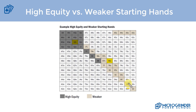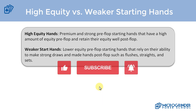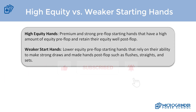That's our introduction to high equity versus weaker starting hands. The main takeaway is understanding the difference between the two, because as we look at different ranges in different situations, I want you to understand what portion of a range is high equity hands versus weaker starting hands — the types of hands they'll make that win most of the time, and how we'll play them in specific situations when we get to the post-flop section. If you have any questions let me know, thanks for watching, and I'll see you in the next video.